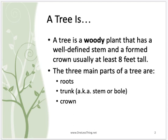A tree is a woody plant that has a well-defined stem and a formed crown, usually at least eight feet tall. Now we know that there can be taller trees and there can be shorter trees. This definition just kind of encompasses the average and talks about what a typical tree would look like.